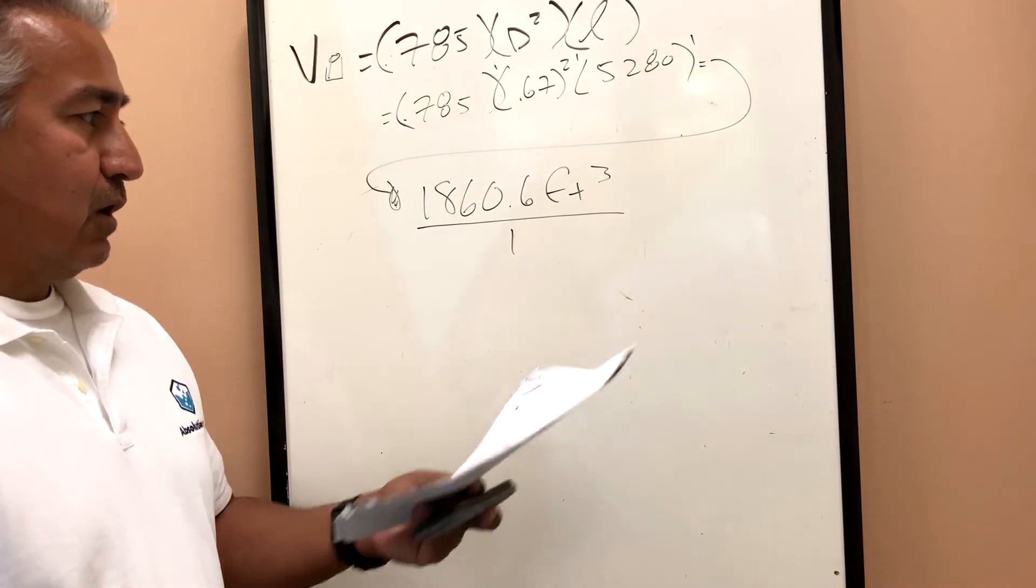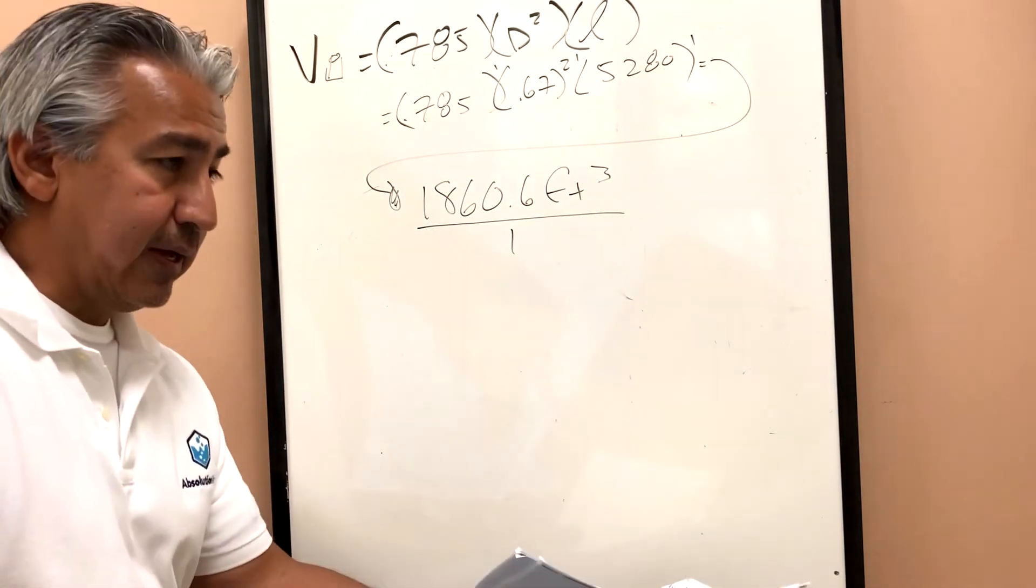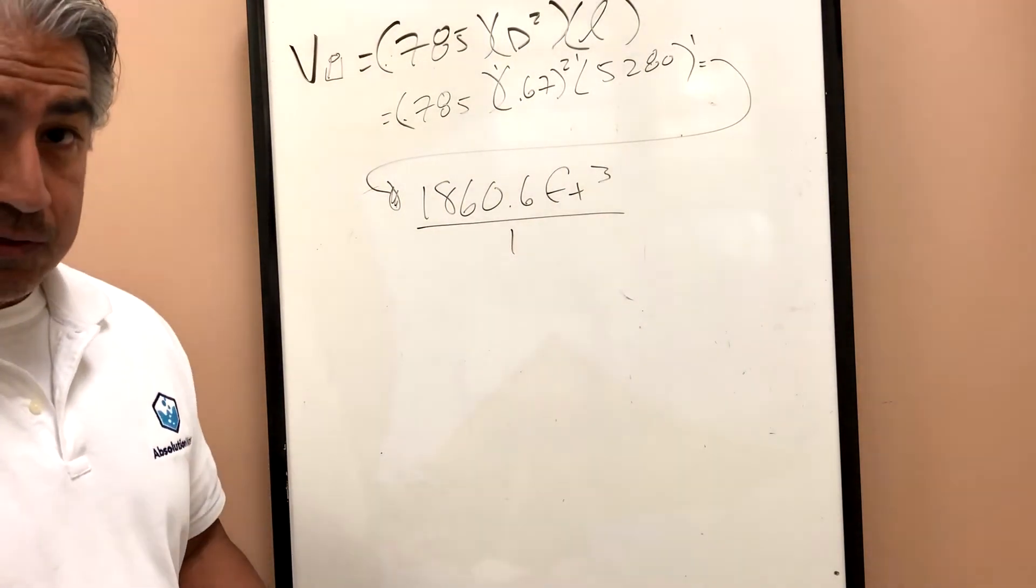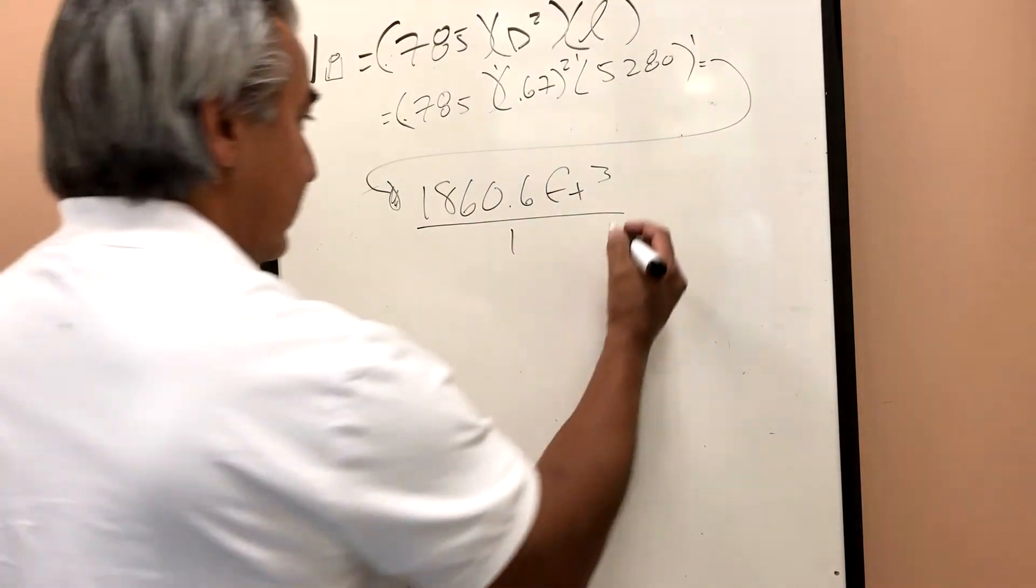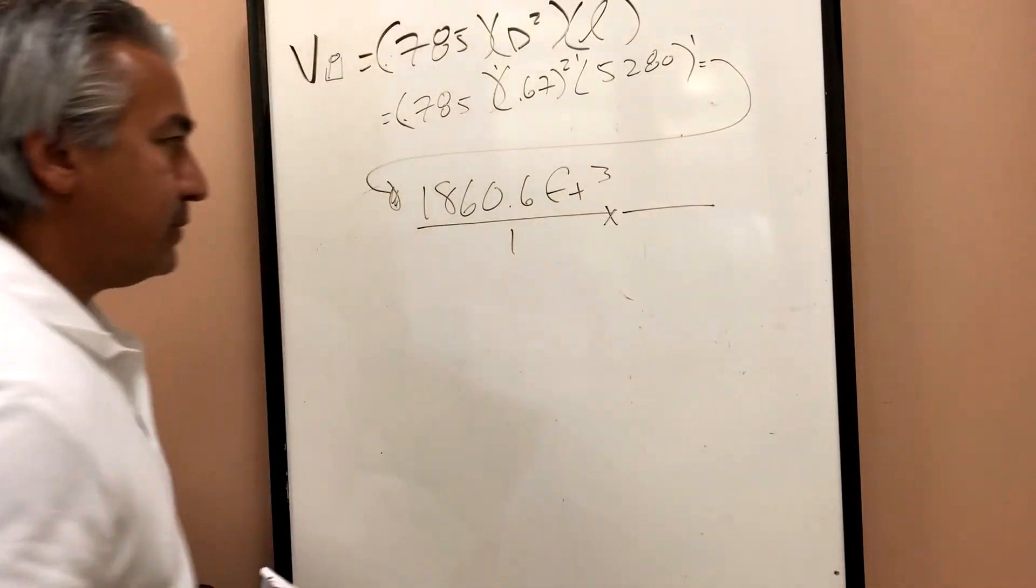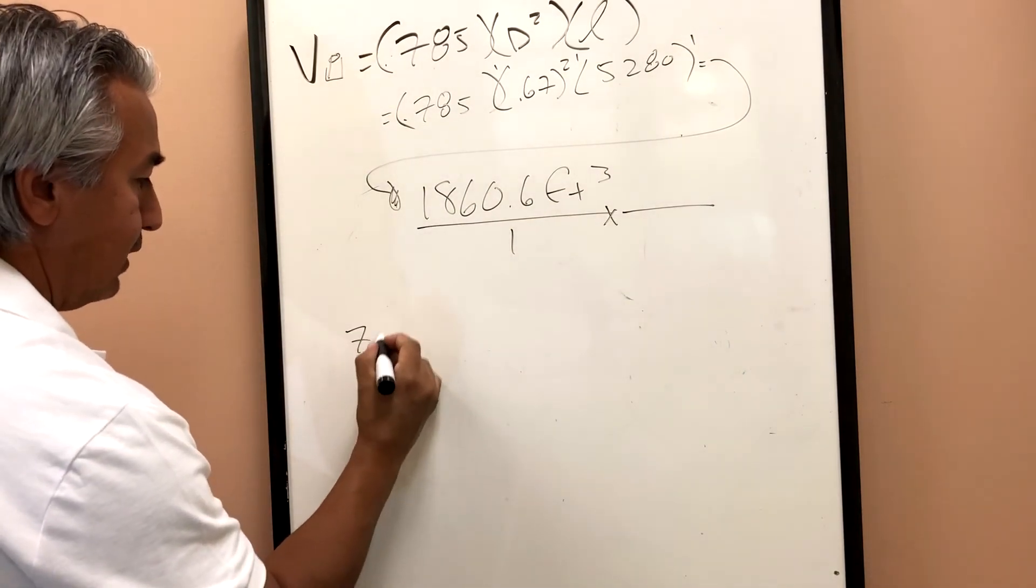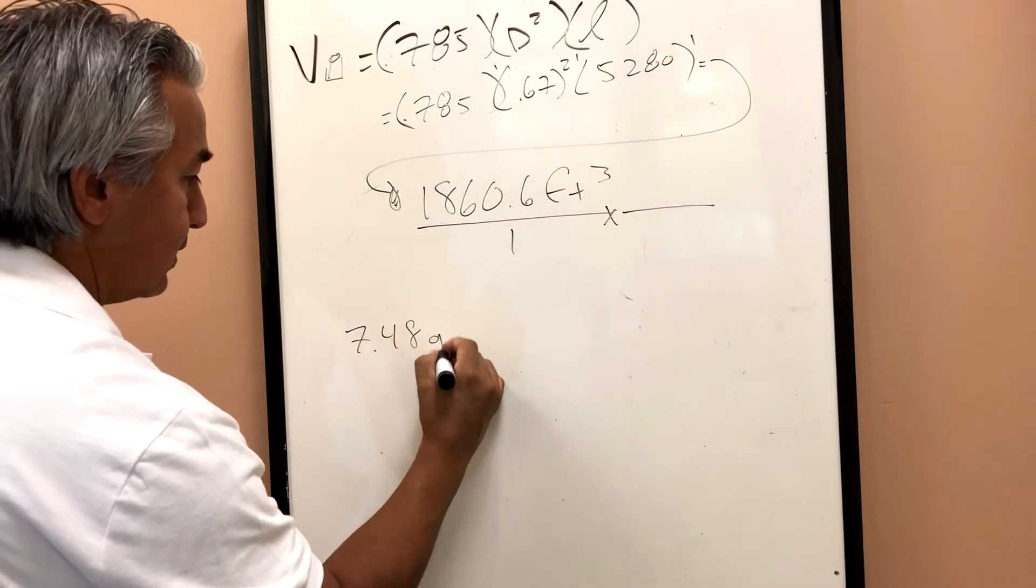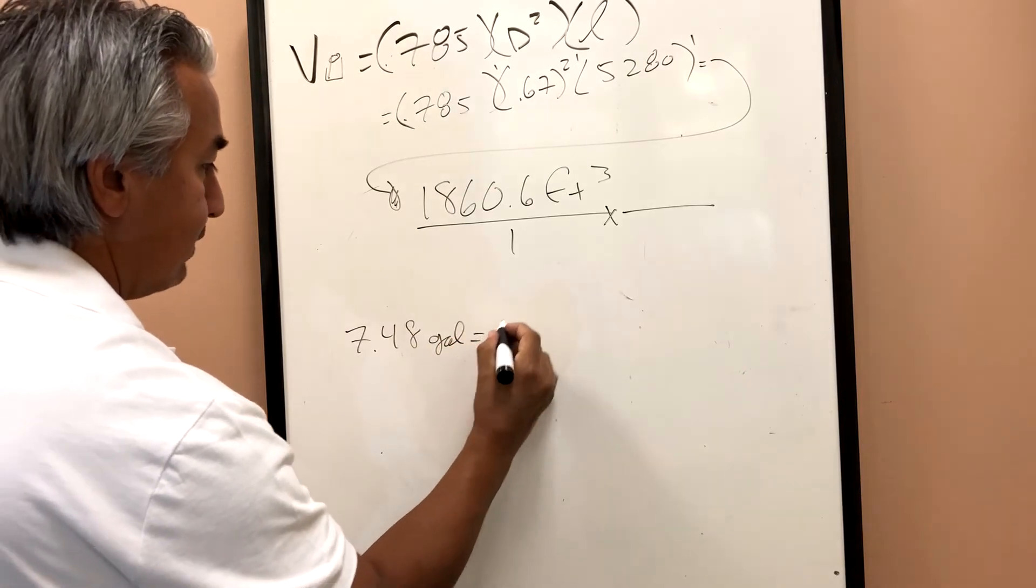And then remember the conversions, we're always going to multiply by a fraction. So I'm just going to say multiply by that fraction. I know that there are 7.48 gallons for every cubic foot of water.